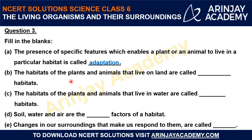The second statement: the habitats of the plants and animals that live on land are called terrestrial habitats. The third statement: the habitat of the plants and animals that live in water are called aquatic habitats. The fourth: soil, water and air are the abiotic factors of a habitat. Soil, water and air are the non-living components of any given habitat, so they are referred to as abiotic factors.